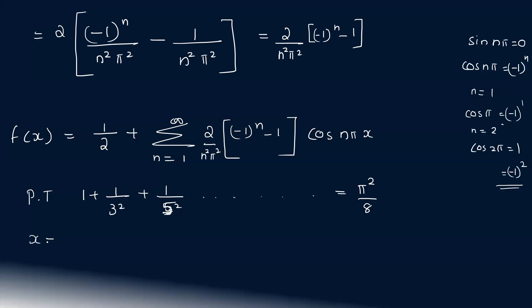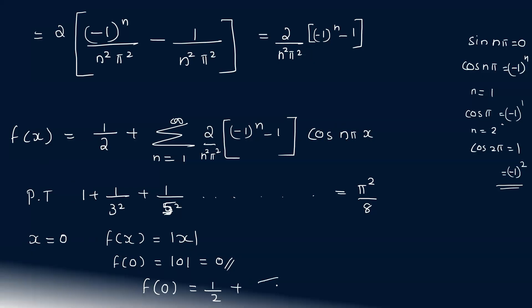To prove the identity, substitute x equals 0. At x equals 0, f of 0 equals 0. Substituting in the Fourier series: f of 0 equals 1 by 2 plus summation n equal to 1 to infinity of 2 by n squared pi squared times minus 1 raised to n minus 1, times cos 0.